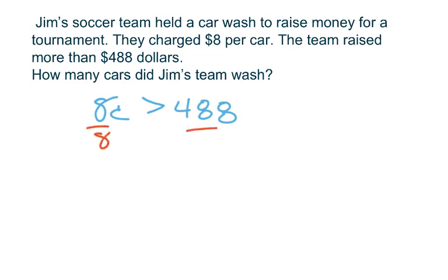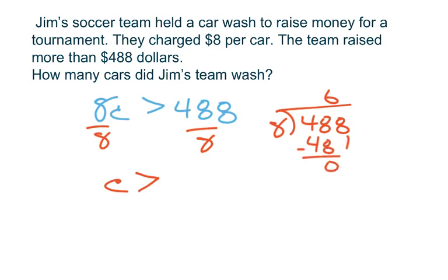We divide on each side by 8, which gives us c is greater than 488 divided by 8. Now we can do a little side problem if we're not sure of the answer. And we would say, let's see, 6 here, we get a 48 there, 0, 0, we bring down our 8 right here, 8 divided by 8 is 1. So we now know that c is greater than 61.